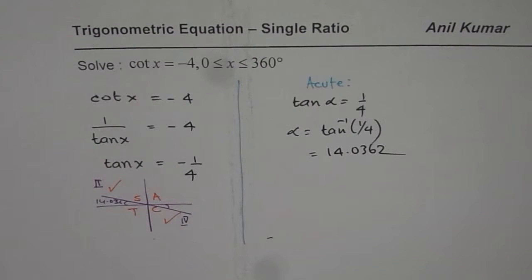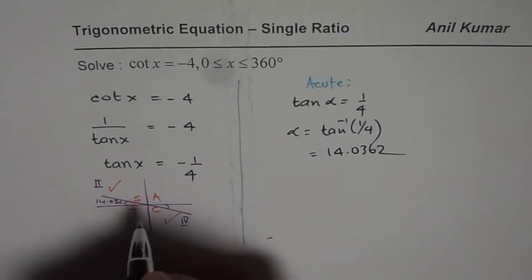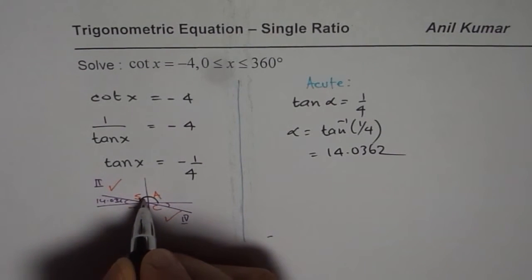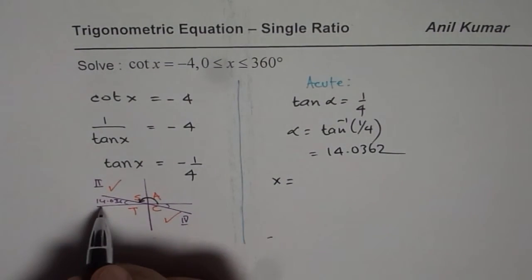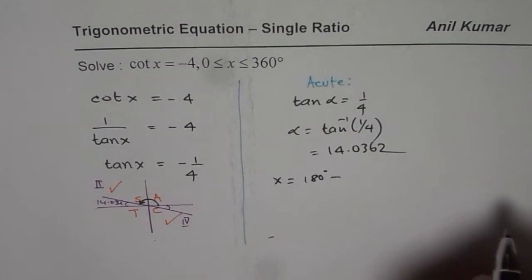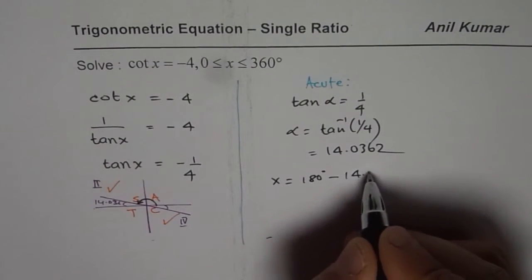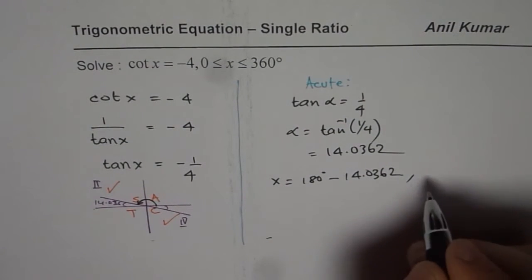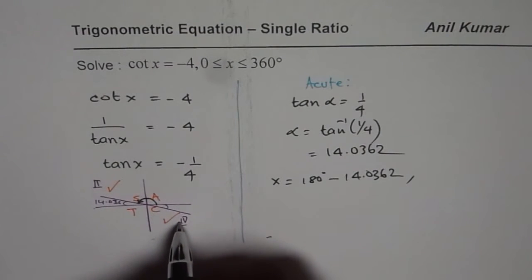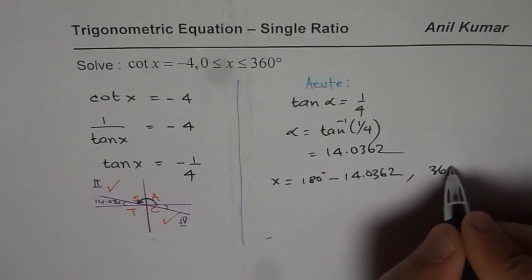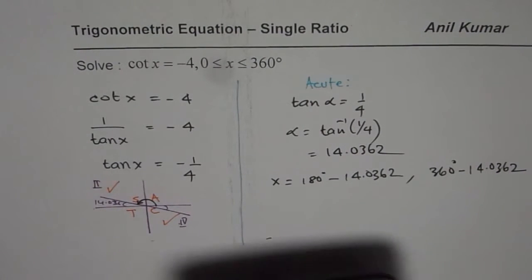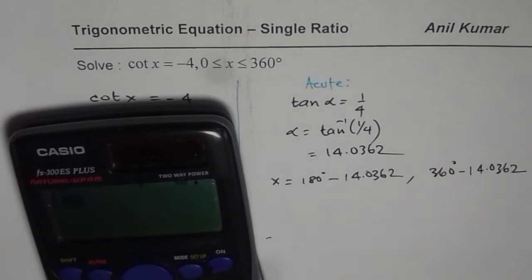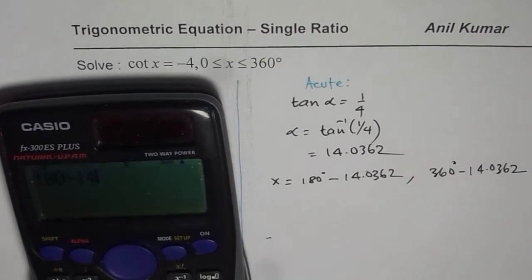Now what is the solution? The solution is the two principal angles. So x value will be 180 degrees minus 14.0362. That is one solution, and the other one will be coordinate 4, which is 360 degrees minus 14.0362. So let us find it out. So one is 180 minus 14.0362 equals to,